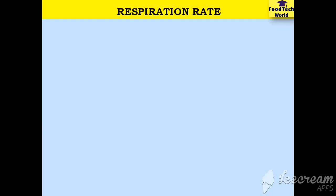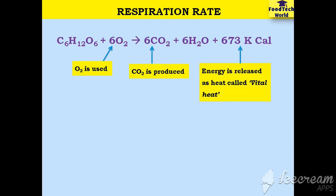The first internal factor is respiration rate. Here is the equation of cellular respiration. Glucose, a carbohydrate, acts as a fuel for cellular respiration. Besides carbohydrates, fats and proteins can also be used as fuels. When glucose is oxidized, it is converted into simpler sugars and carbon dioxide is liberated during this process.